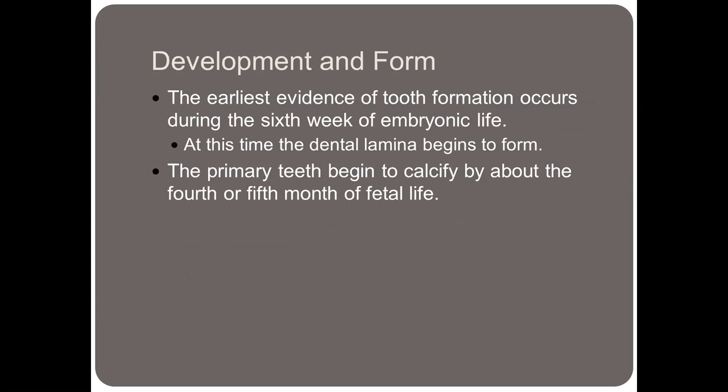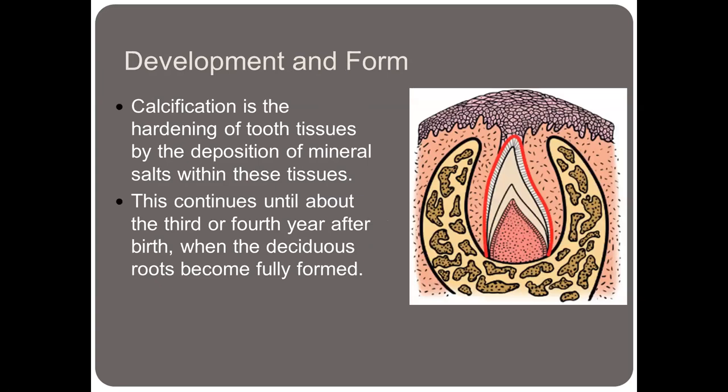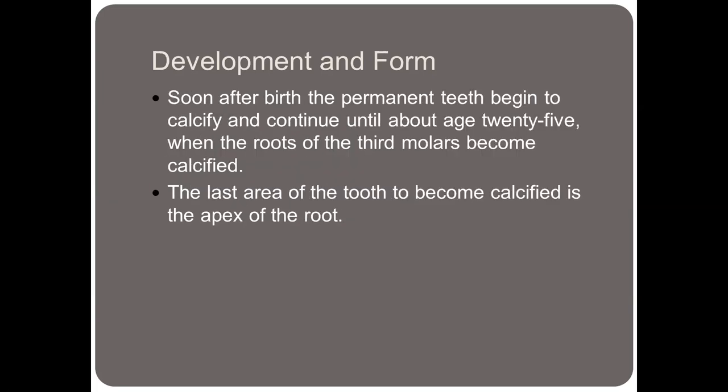The earliest evidence of tooth formation occurs during the sixth week of embryonic life. It's at this time that the dental lamina begins to form, and the primary teeth begin to calcify by about the fourth or fifth month of fetal life. Calcification is the hardening of tooth surfaces by the deposition of mineral salts within these tissues. This continues until about the third or fourth year after birth when the deciduous roots become fully formed. Soon after birth, the permanent teeth begin to calcify and continue until about the age of 25 when the roots of the third molars or wisdom teeth become calcified.